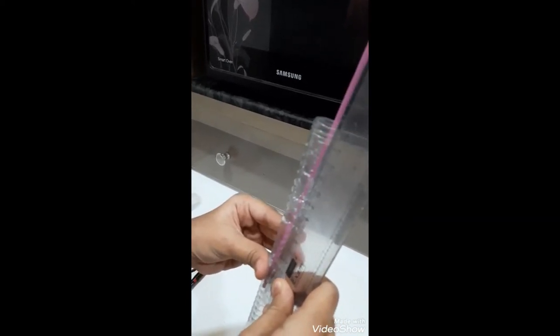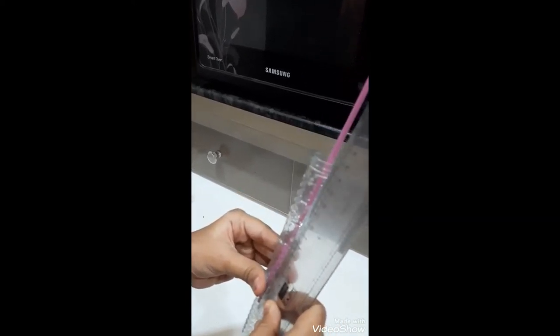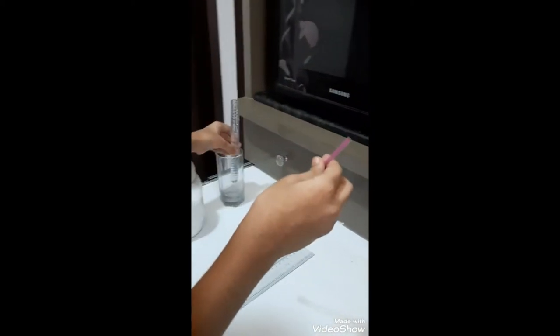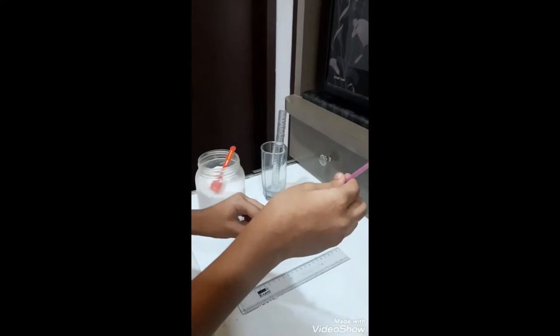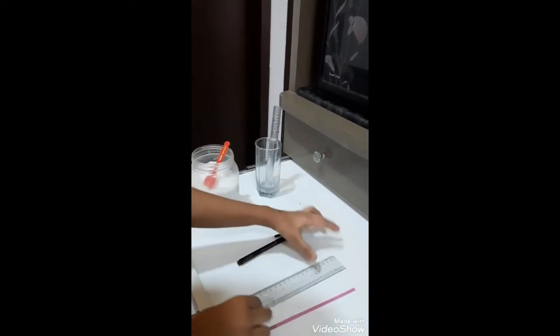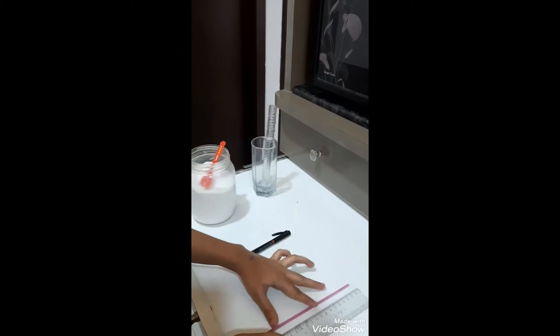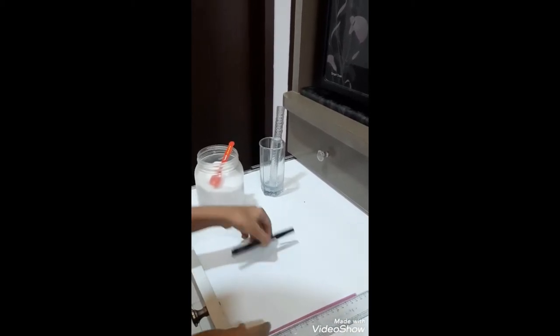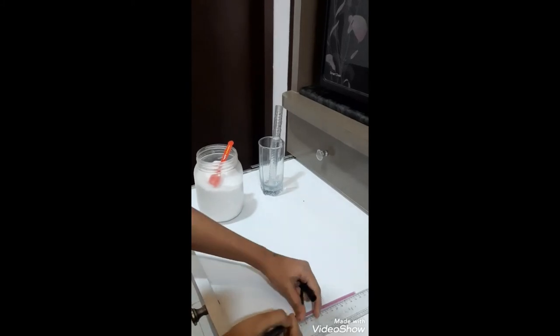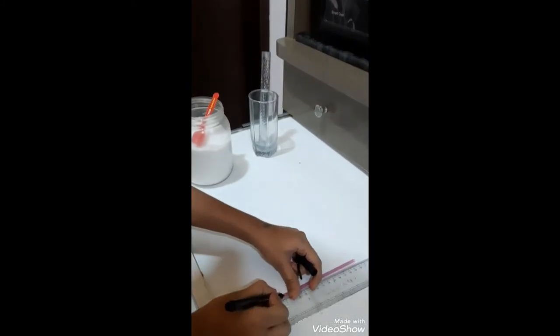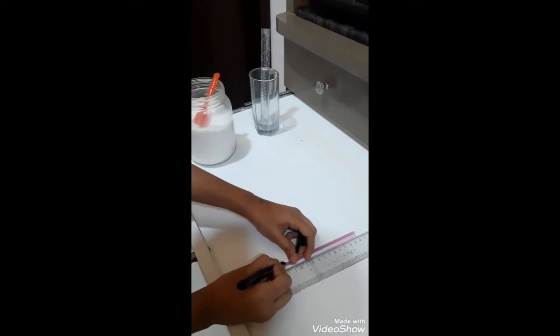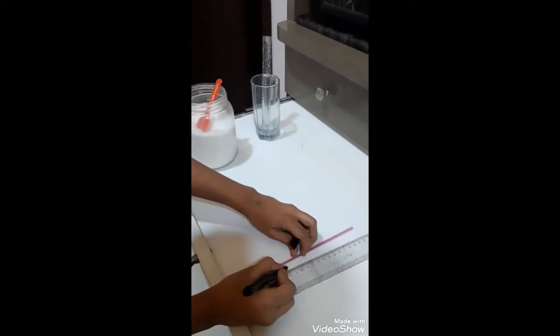So it is seven centimeters, so I'll remove my straw. Then I'll take the ruler and I'll measure seven centimeters and mark seven centimeters over here with my permanent marker.